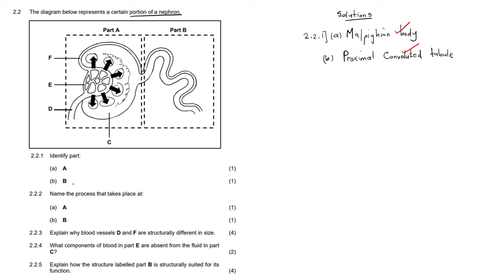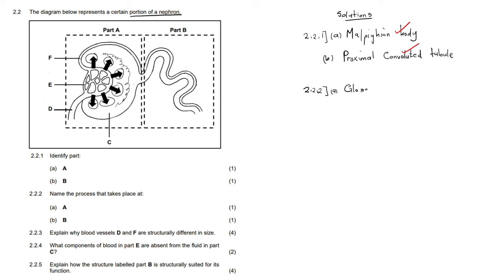Question 2.2.2 asks: name the process that takes place at part A. If part A is the Malpighian body, the process that takes place there is glomerular filtration — also known as ultrafiltration. Other textbooks may say ultrafiltration, but they refer to the same thing. This is the process whereby smaller dissolved substances move from the blood in the glomerulus into the Bowman's capsule, where they are filtered.